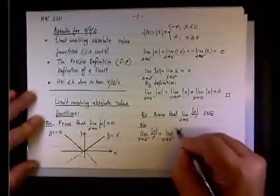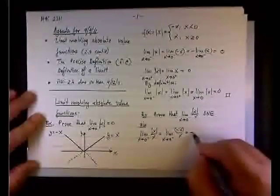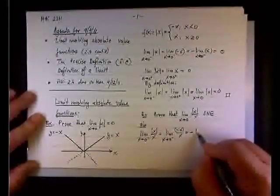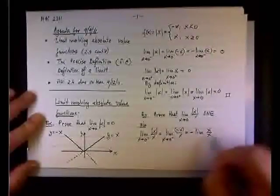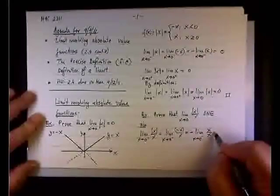And again, the negative—this is a constant multiplier, so we'll take it outside the limit like so. And now we have the limit of x over x, and of course it's negative 1.